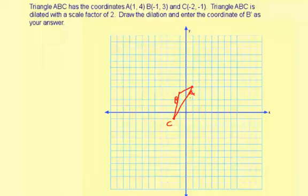And it's dilated with a scale factor of 2. Now, if we're using the origin here as a center of dilation, that means each coordinate is going to be twice as far away from the origin as it is now.